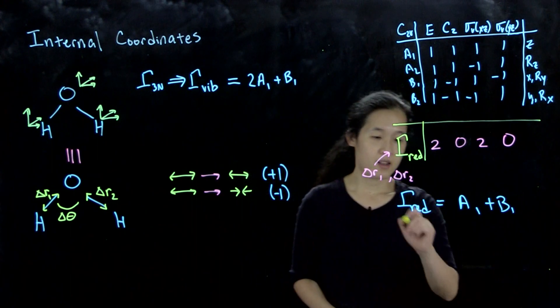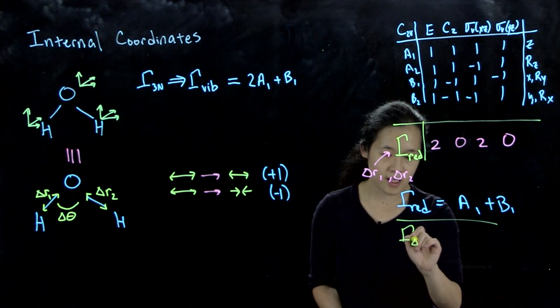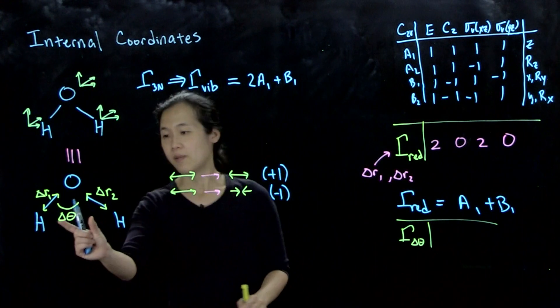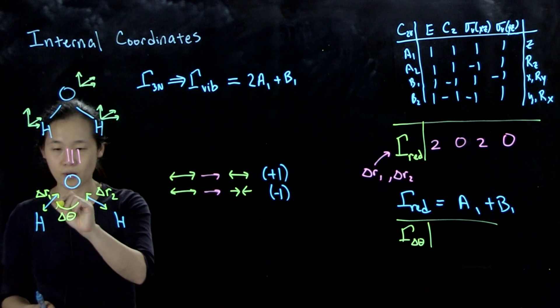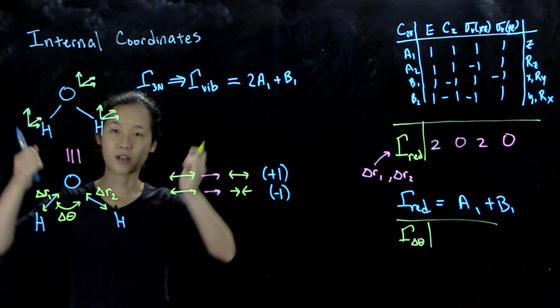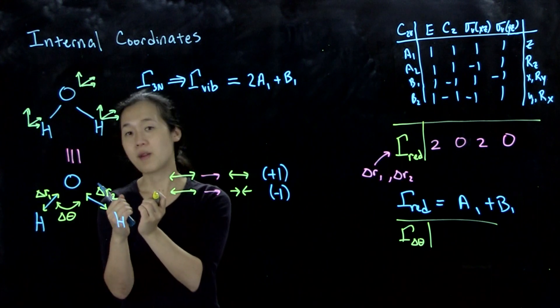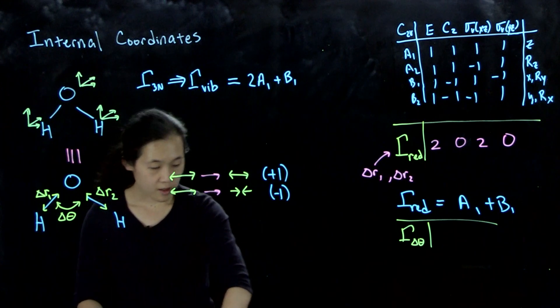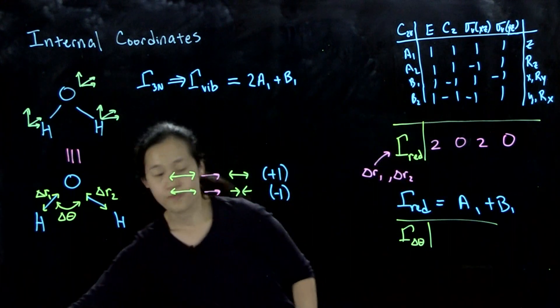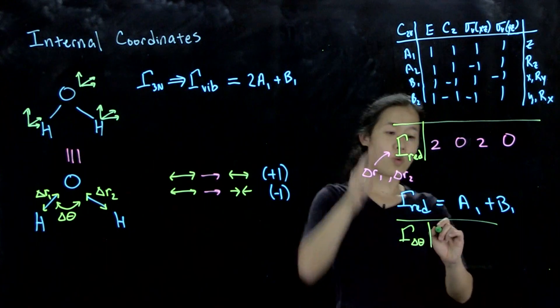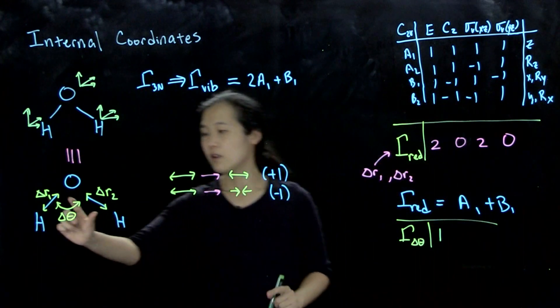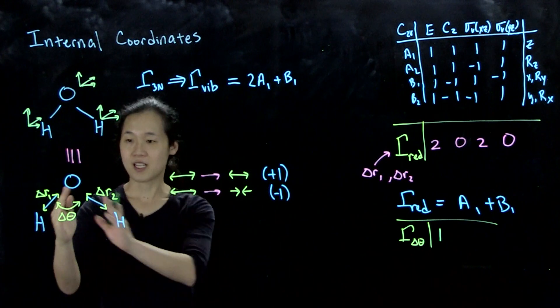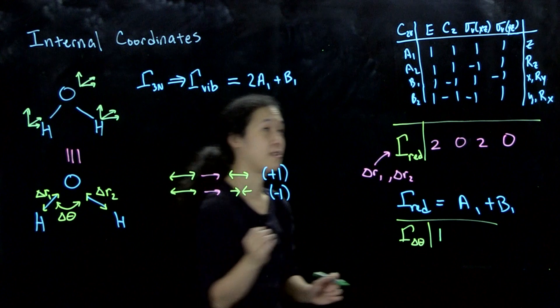What if we think about gamma of our delta theta? Imagine this is our theta. We're thinking about whether the angle's getting bigger or getting smaller. If it got smaller, that would be minus 1. If it stays the same, it's a plus 1. So if we're finding the character, under E it's 1 because we're looking at one angle. If we do a C2, flip it around, the theta stays in the same position and it's not changing direction, so this is still a 1.